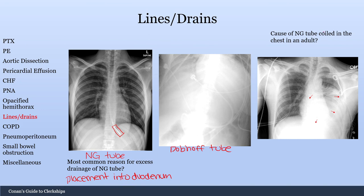What is the cause of an NG tube coiled in the chest in an adult? Here you can see the NG tube coming down and then back up — you know it's not in the lungs because it's not tracking down the main stem bronchi. This would indicate a ruptured diaphragm, which causes the stomach to herniate up into the lung field. The NG tube is still in the stomach, but you're seeing it in the lung field because the diaphragm is ruptured and the stomach is displaced superiorly.